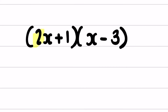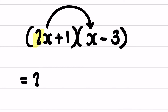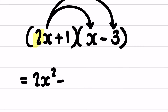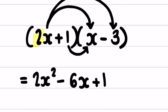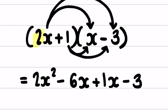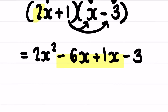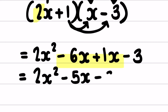Looking at our last example, I have a coefficient in front of my x. First times first: 2x times x gives me 2x squared. Outer times outer: 2x times negative 3 — a positive times a negative is a negative — 2 times 3 is 6, carry down your x, so negative 6x. Inner times inner: positive 1 times x is positive 1x. And last times last: positive 1 times negative 3 — a positive times a negative is a negative — 1 times 3 is 3. Collecting like terms: 2x squared, negative 6x plus 1x is negative 5x, carry down minus 3.